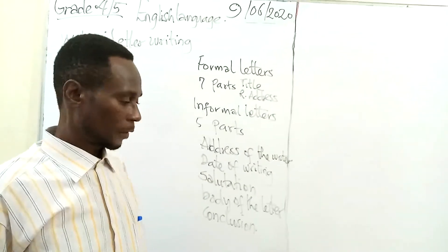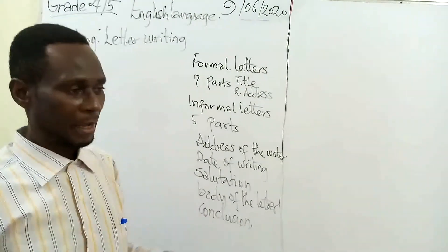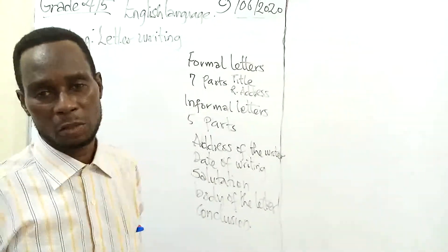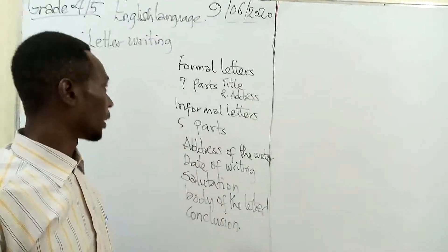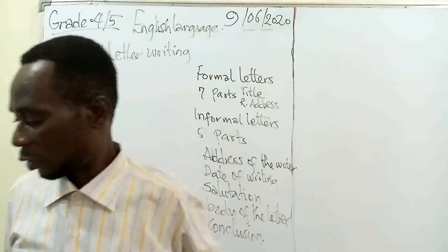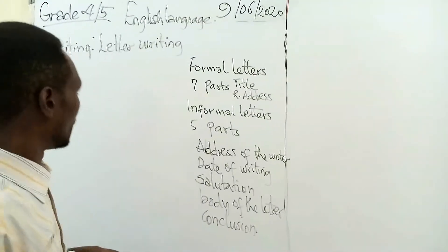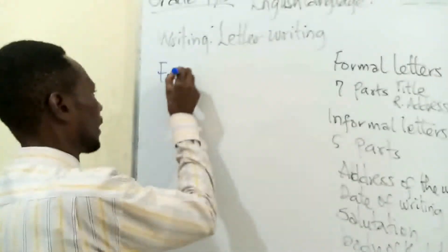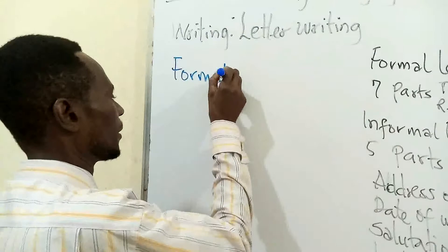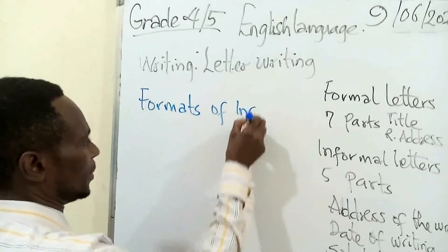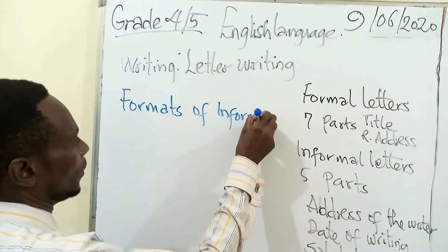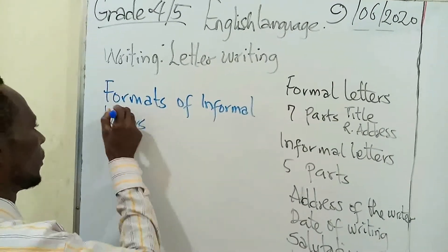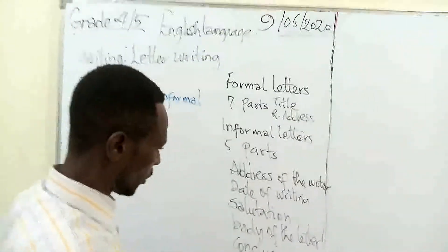Our loved ones — our mom, our dad, our brother, sister, friend, classmate, you name them. All those people that are very close to you. So we are going to be looking at that type of letter today. Today we are going to look at formats of informal letters. That is going to be our topic today.